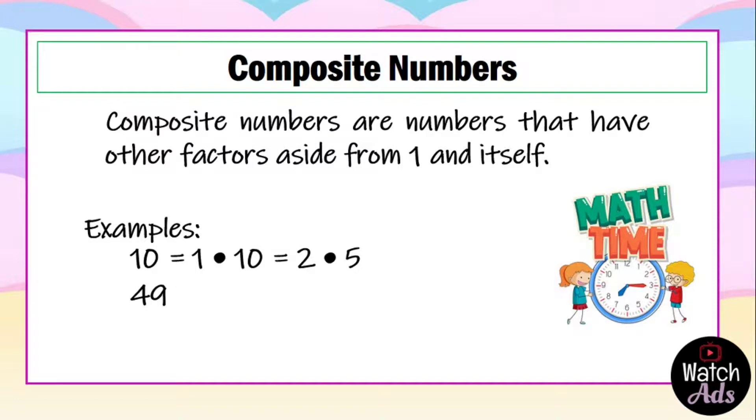Another number is 49. 49 is a composite number because 1 times 49 is equal to 49, and 7 multiplied by 7 is equal to 49, which means 49 has three factors: 1, 7, and 49.